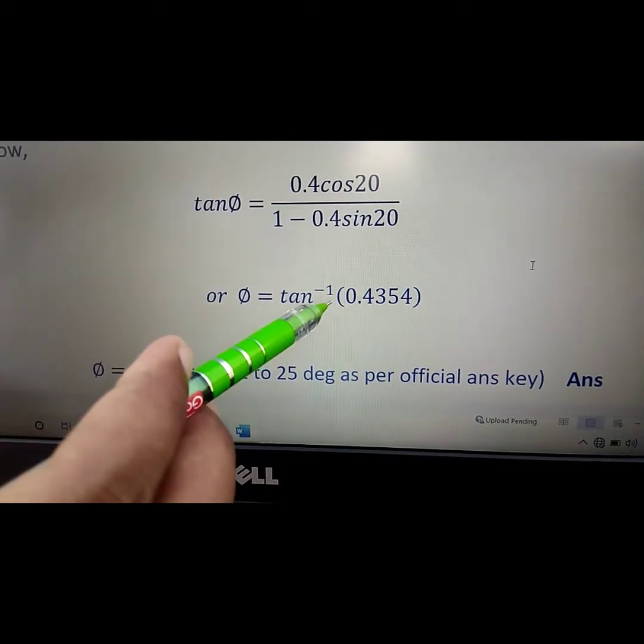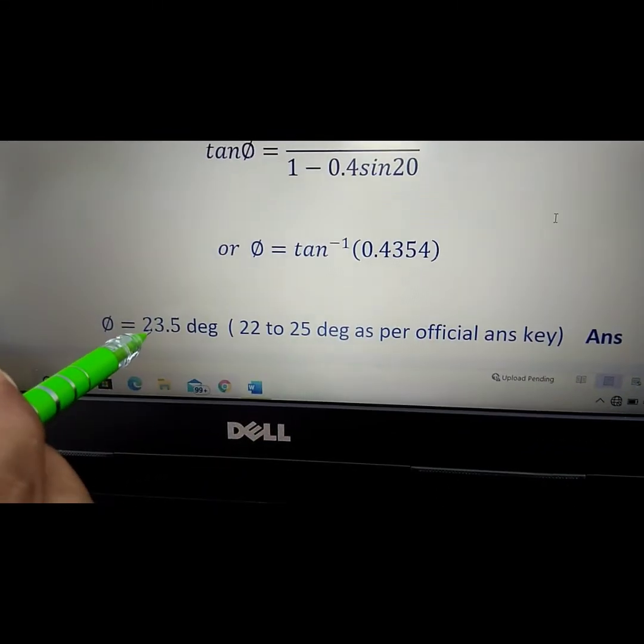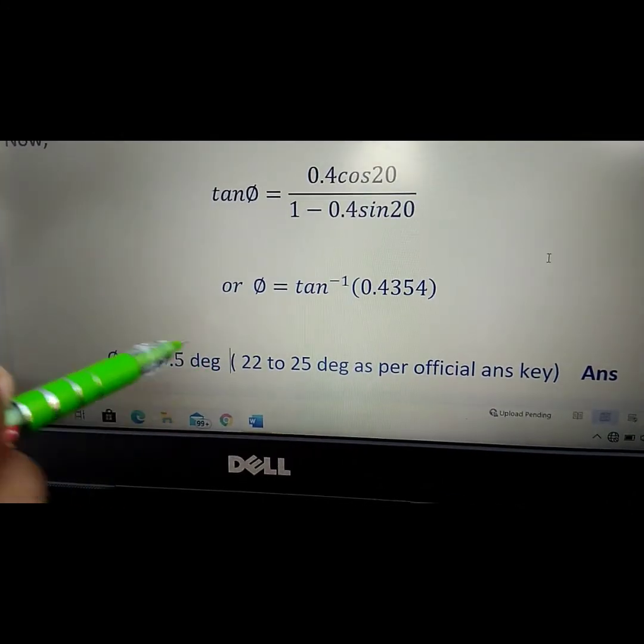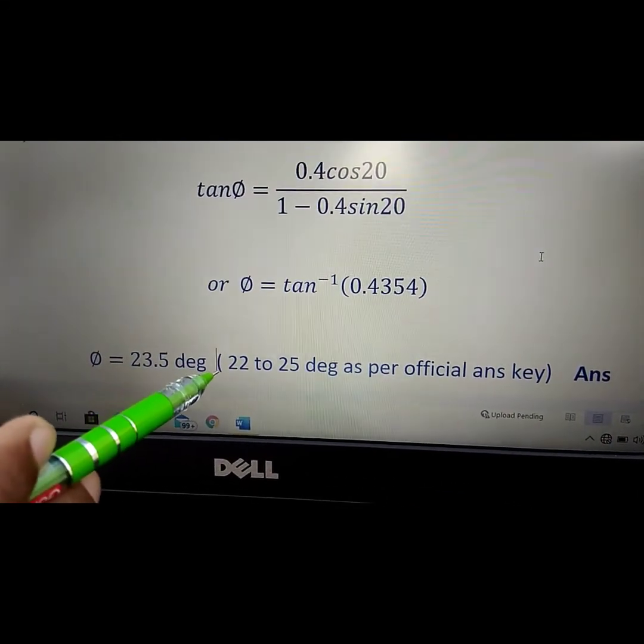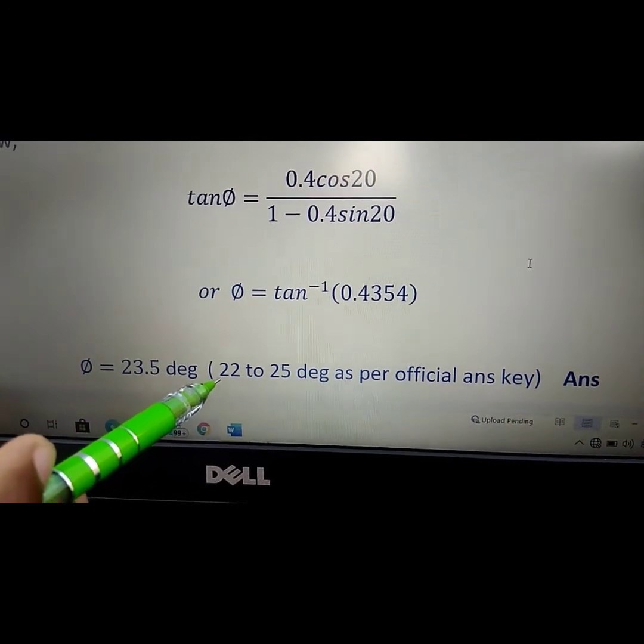Or φ equals tan inverse of 0.4354, so φ equals 23.5 degrees. This is our answer. As per the official answer key, the answer for this question is from 20 to 25 degrees.